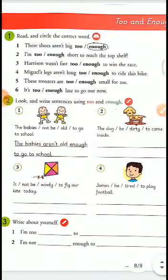Next exercise: read and circle the correct word. These shoes aren't big enough. I am too short to reach the top of the shelf — the word is 'too' (T-double-O). Harrison wasn't fast enough to win the race. Meekul's legs aren't long enough to reach. These trousers are too small for me — T-double-O. It is too late to go out — the word after is 'late', so we use 'too'.